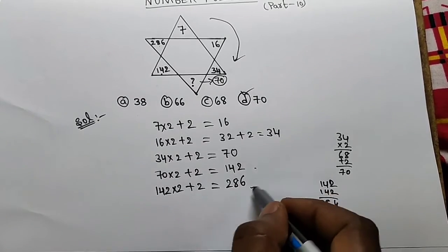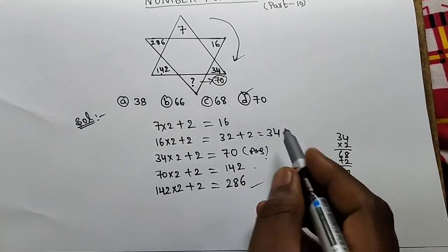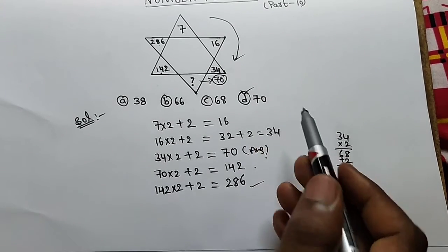286. So our answer is 70. That is option D.